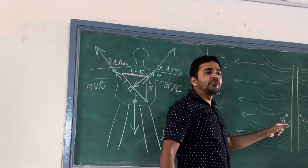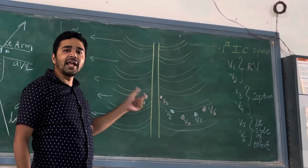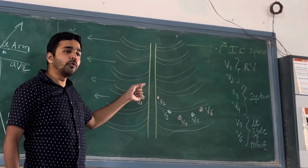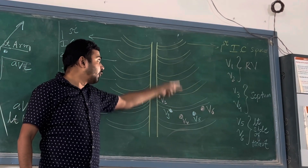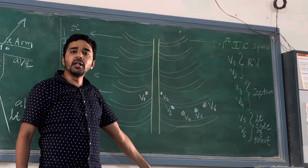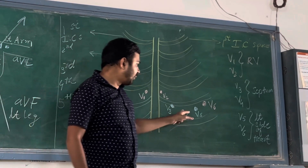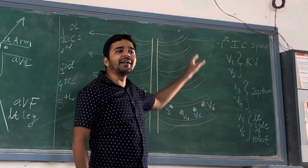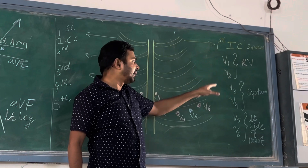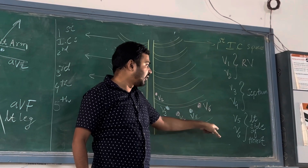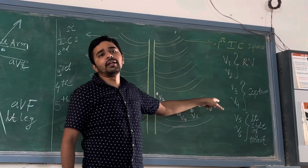And for chest leads — unipolar chest leads: V1 in fourth intercostal space on the right side. V2 in fourth intercostal space on the left side of the sternum. V4 on the mid-clavicular line at the apex. V3 between V2 and V4. V6 on mid-axillary line. V5 between V4 and V6. V1 and V2 give the idea of the right ventricle. V3 and V4 for the septum. V5 and V6 for the left side of the heart and left ventricle.